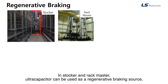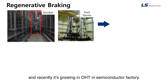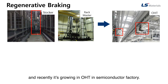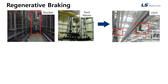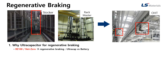First, regenerative braking. In Stacker and RecMaster, Ultra Capacitor can be used as a regenerative braking source, and recently it is growing in OHT and semiconductor factories. To implement RE100 and Net Zero goals, there is an increasing need for regenerative braking in factories because it can reduce electricity costs.